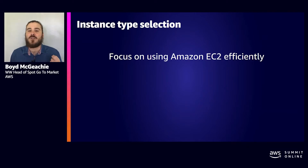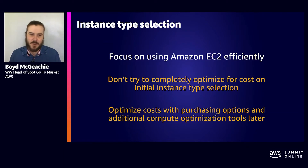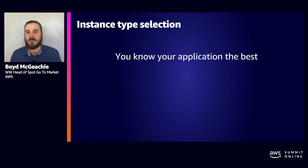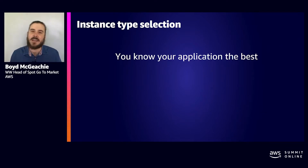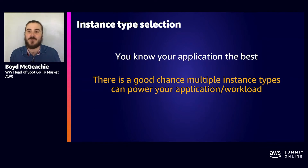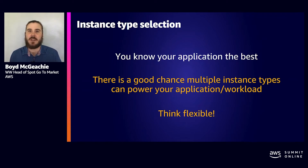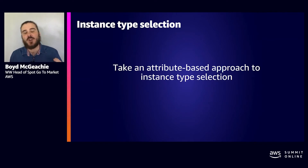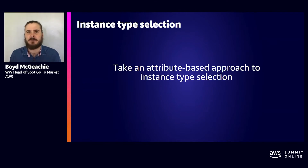Start by thinking about flexibility first. You know your application better than I do. When you start looking at your application and say, I need at least eight cores, I need at least 60 gigs of memory, there's a very good chance you'll discover that there are a lot of different options that work for you. That is the right way to begin — stay in that mentally flexible space. What are all the instances that would meet your application's needs? Take an attribute-based approach: work backwards from what your application needs, and it will dramatically simplify this process.